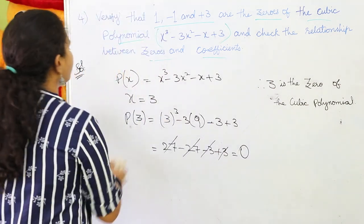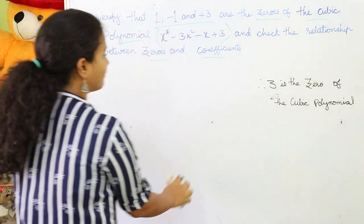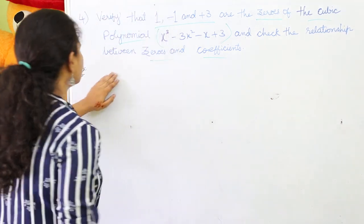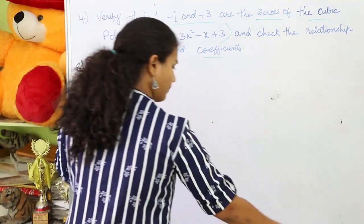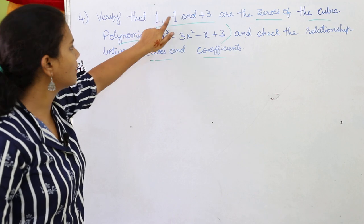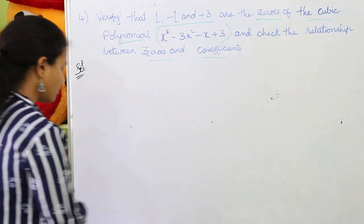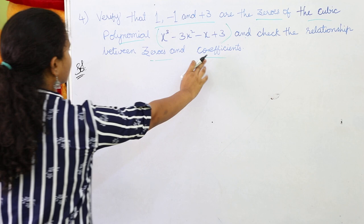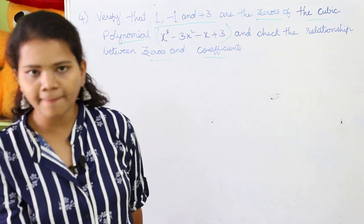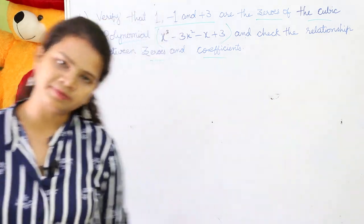Let us assume alpha = 1, beta = -1, and gamma = 3. In quadratic polynomials we have two relations: alpha + beta = -B/A and alpha × beta = C/A. But for cubic polynomials, we have a third variable gamma, giving us three relations. The first relation is alpha + beta + gamma = -B/A.